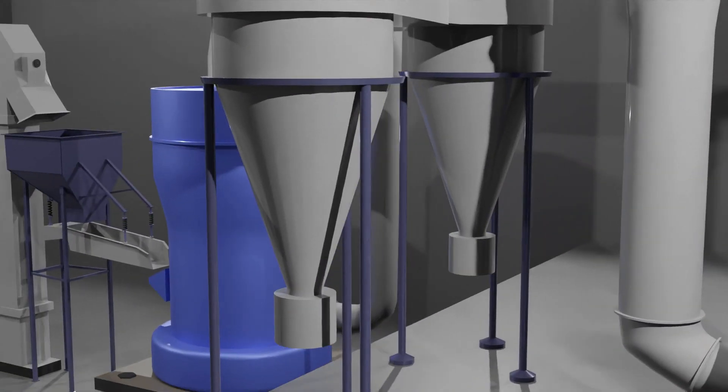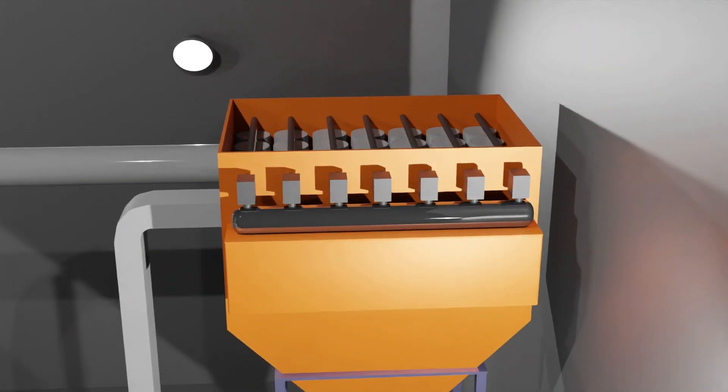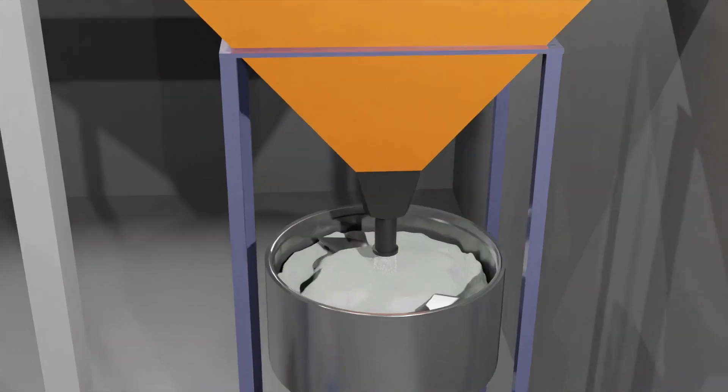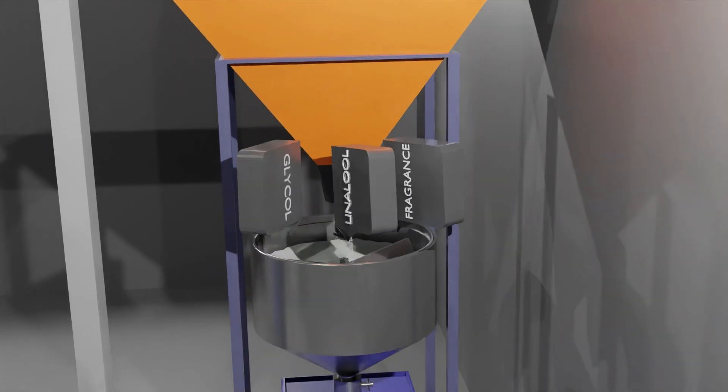Dust collector contains filter bags which are connected to air reservoir attached with solenoid valves. When the powder is entered through the inlet, heavy particles fall down into another mixer where glycol, linolol, fragrance, and other ingredients are added, mixed, and transferred into hopper.